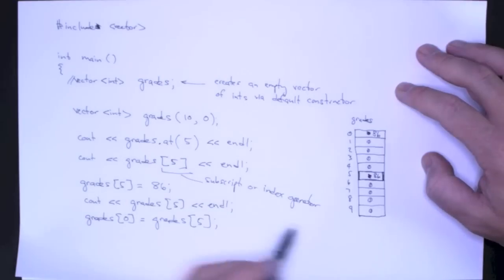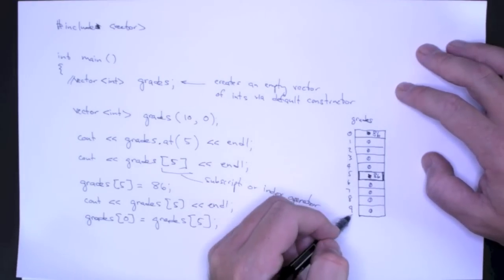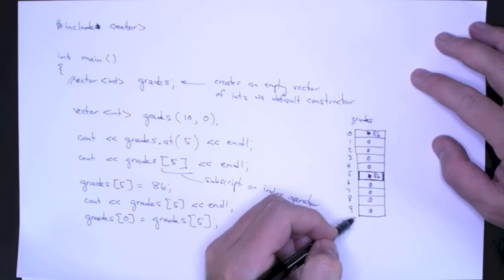There's also a method that will give me the size of the vector. So in this case, the size method will return 10.